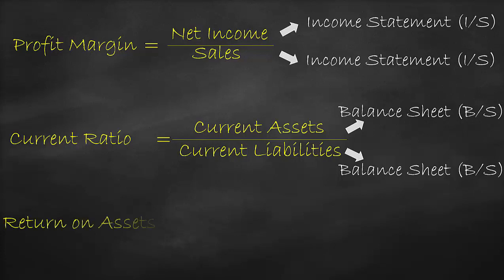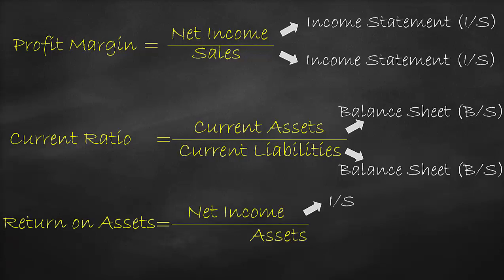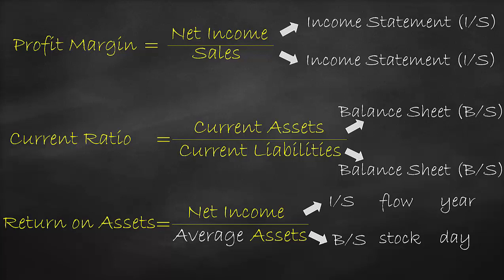The return on assets ratio is net income divided by assets. We get net income from the income statement and assets from the balance sheet. Note that the income statement is a flow account, calculated over a year, while the balance sheet is a stock account, calculated at a certain point in time. Since we cannot compare a year to a day, we need to convert a day into a year by getting the average of the two balance sheet items.